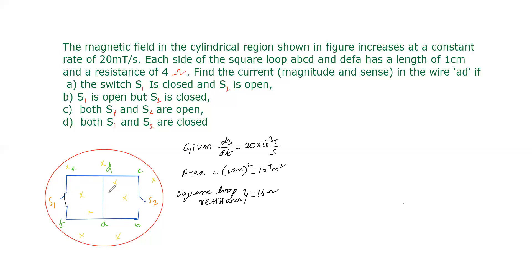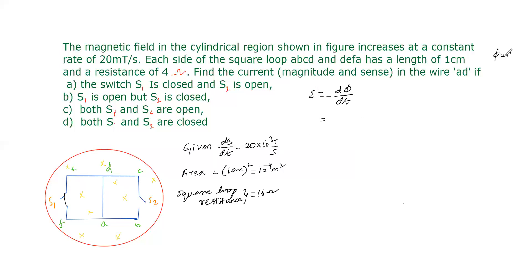When this loop is closed, the magnetic flux changes, so an EMF is induced. The EMF formula is equal to the rate of change of flux. For magnitude, EMF equals rate of change of flux. Flux equals B times A, and since area A is constant, we take dB/dt out.